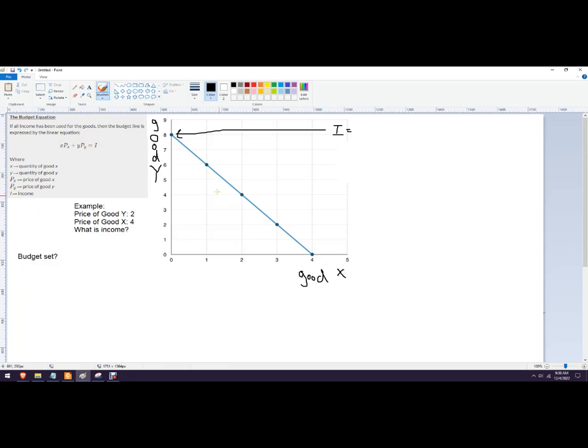Now, all of those possible purchases, that's known as the budget set, the set of choices that a consumer could make using this particular income. So you might run into something where you know the prices, we're looking at the budget line and we want to solve for income.